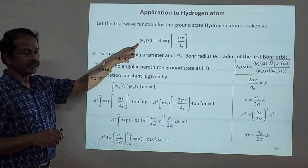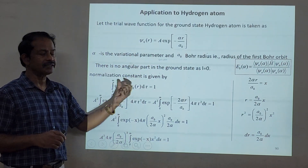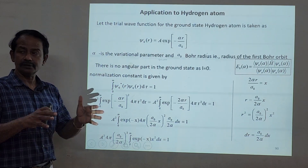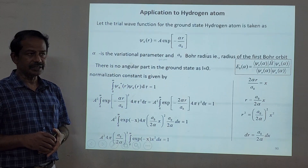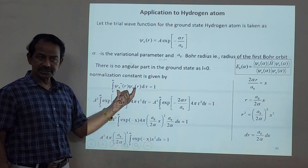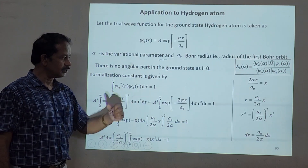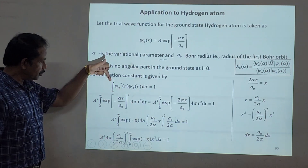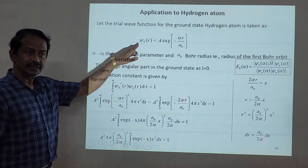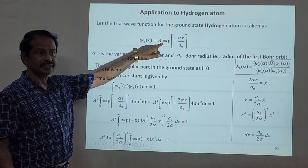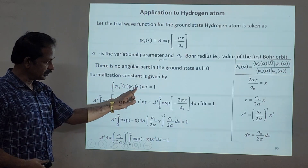Here we are talking about ground state energy, so the angular momentum is equal to zero. First we will calculate the normalization constant. The normalization condition is given by the integral from 0 to infinity of ψ* ψ dτ equal to 1. Since there is no imaginary content, ψ* equals ψ, so multiplying gives e^(-αr/a₀) squared.